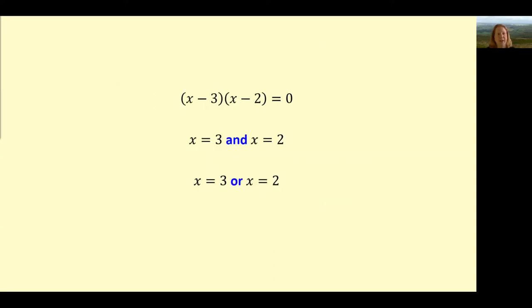But in the context of quadratic equations, we might not stop to think about whether the choice of word matters. Take, for example, factorising quadratic equations to find the solutions. Are these solutions x equals 3 and x equals 2? Or are these solutions x equals 3 or x equals 2? Why might different teachers and students argue that the word 'and' is appropriate? Why might different teachers and students argue that the word 'or' is appropriate?